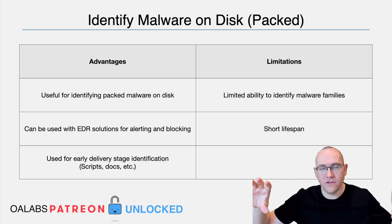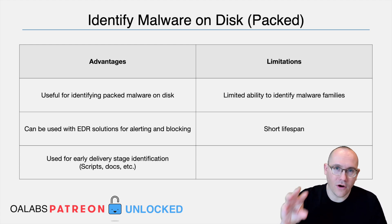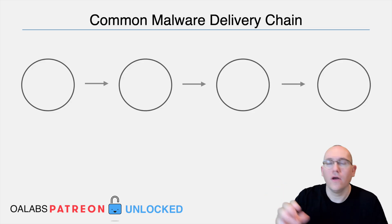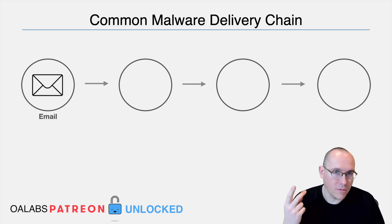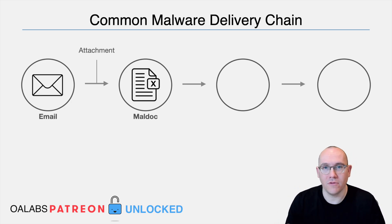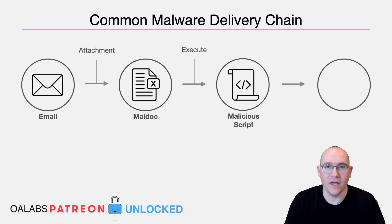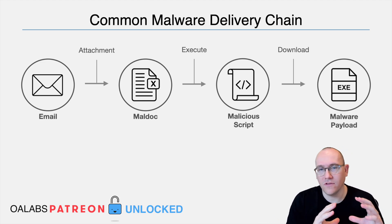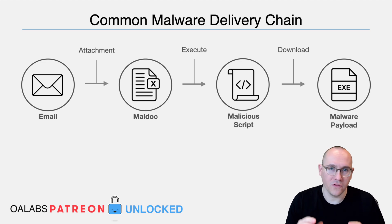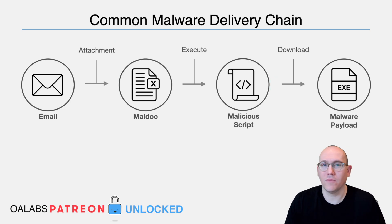If we think of the malware delivery chain as a bunch of steps the malware operator has to take to deploy their target binary on your system, it will often include things like an email with a malicious attachment, which runs a malicious script, which then downloads and executes a binary — the final goal of the malware operator. In this scenario, a lot of these malware identification rules target things like scripts and malicious documents.